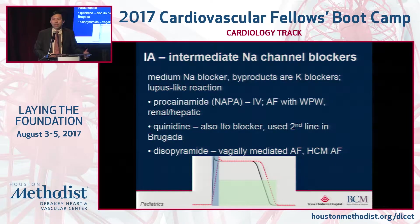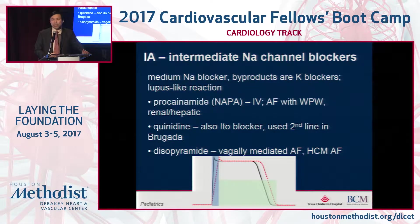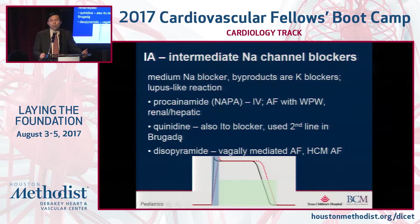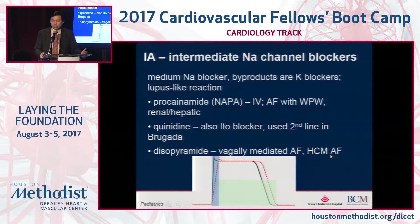The 1A — intermediate sodium channel blockers — also have metabolites that are potassium channel blockers, and on some boards they'll show up in the context of a lupus-like reaction. Procainamide, quinidine, and disopyramide are the three agents. Procainamide's buzzword is atrial fibrillation in Wolff-Parkinson-White, and it's renally and hepatically cleared as its metabolite NAPA, or N-acetylprocainamide. Quinidine blocks the ITO channel and is a second-line agent sometimes used in Brugada syndrome. Disopyramide shows up for vagally mediated atrial fibrillation and hypertrophic cardiomyopathy with AFib. These agents slow the QRS slightly and prolong the QT due to potassium channel blockade.